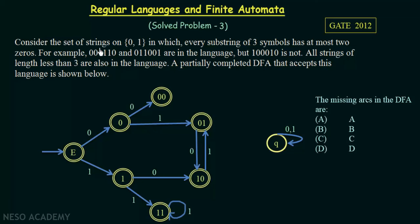The question says: consider the set of strings on {0,1} in which every substring of three symbols has at most two zeros. For example, 001110 and 011001 are in the language, but 100010 is not. All strings of length less than 3 are also in the language. A partially completed DFA that accepts this language is shown, and our task is to find the missing arcs in this DFA.